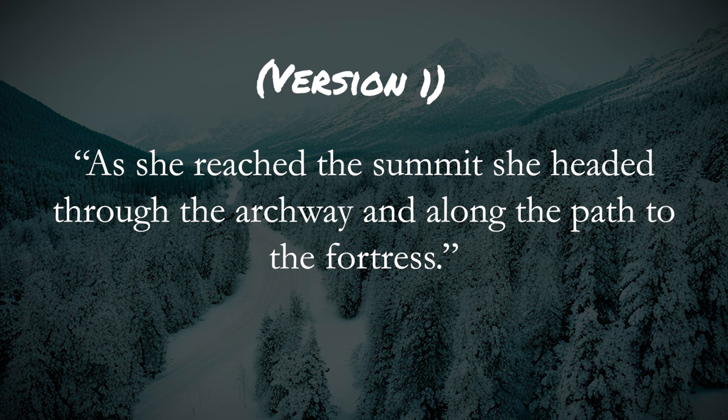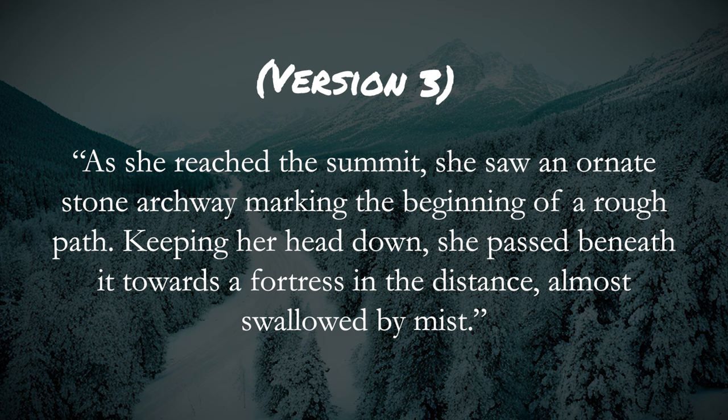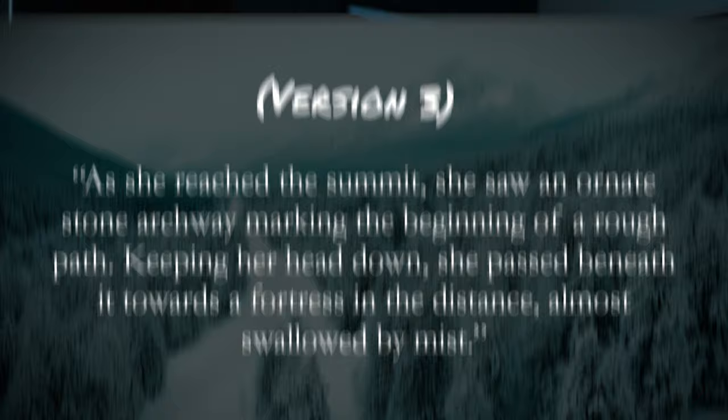Let's have a quick recap. The original doesn't work — it feels a little off because she can't be cresting the summit, passing through an archway, and walking along the path all at once. The simple fix is perfectly fine — it's the most straightforward way to solve the problem by just adding another moment. But the expanded version might be more interesting because we've added description and there's more variation in the actions. Next, let's look at another issue I see fairly often that's not too dissimilar.